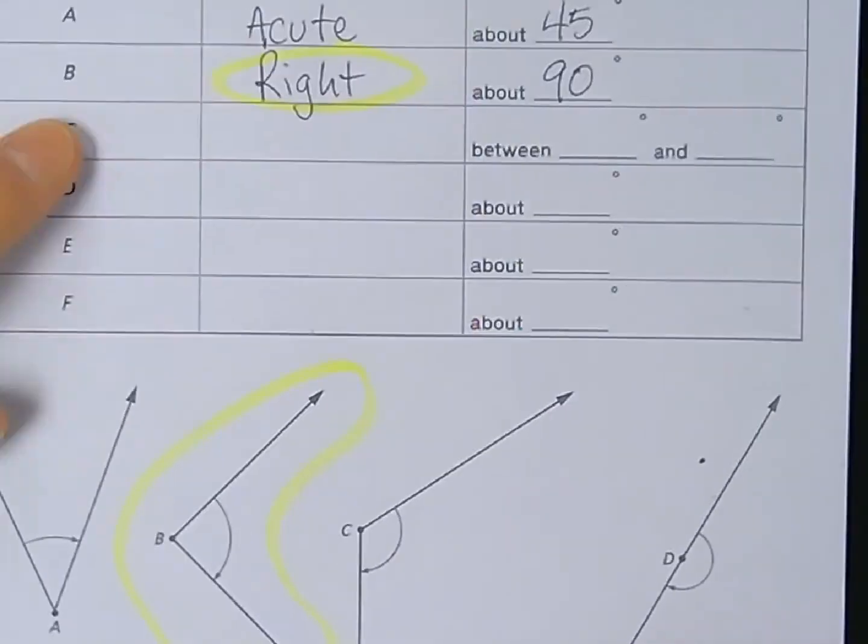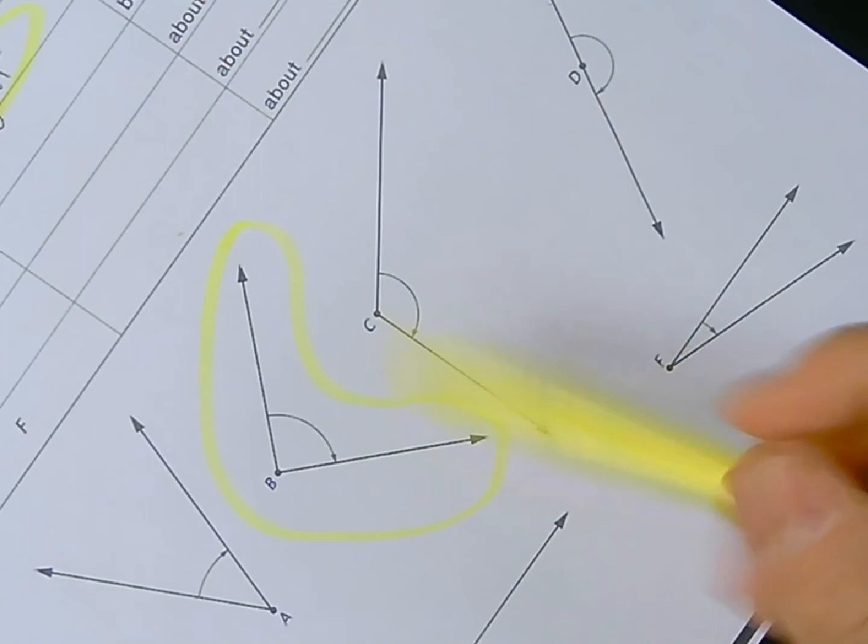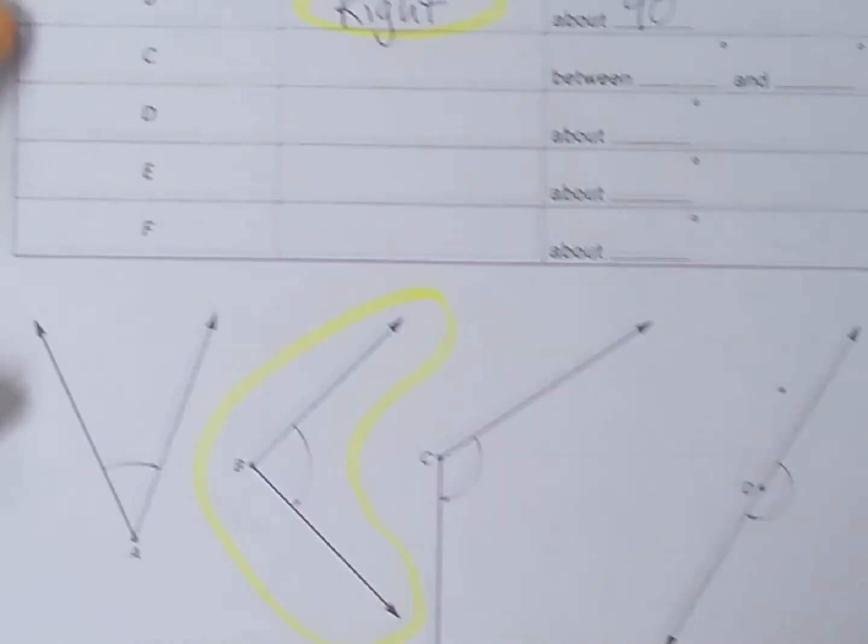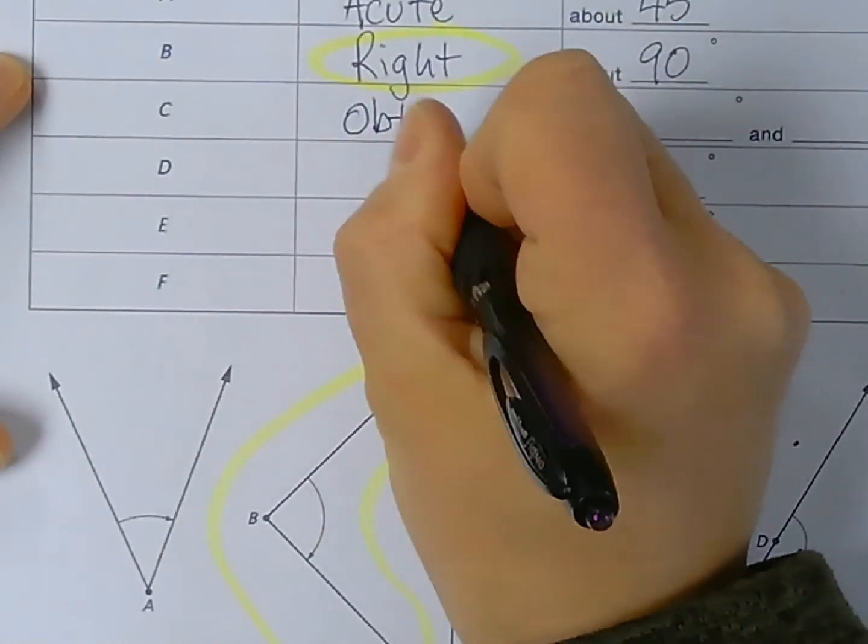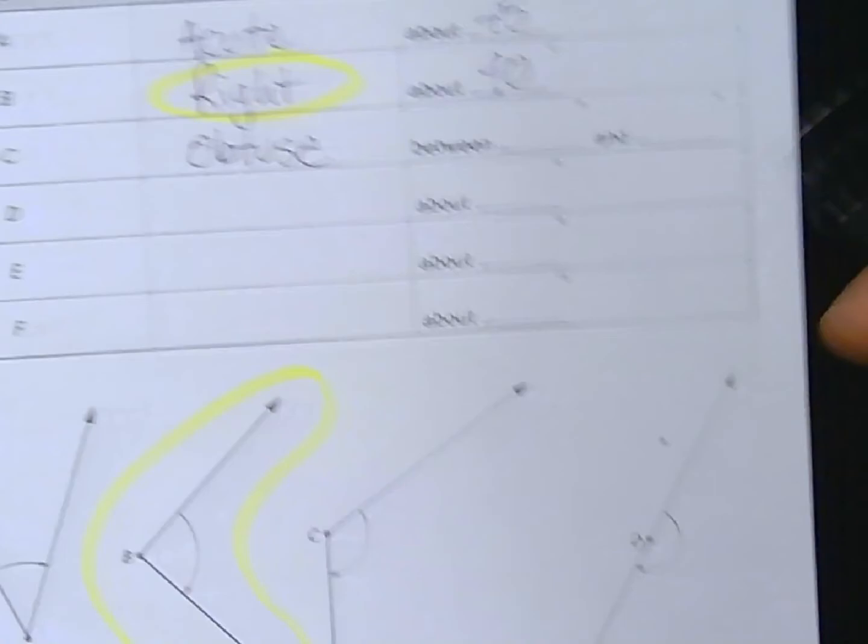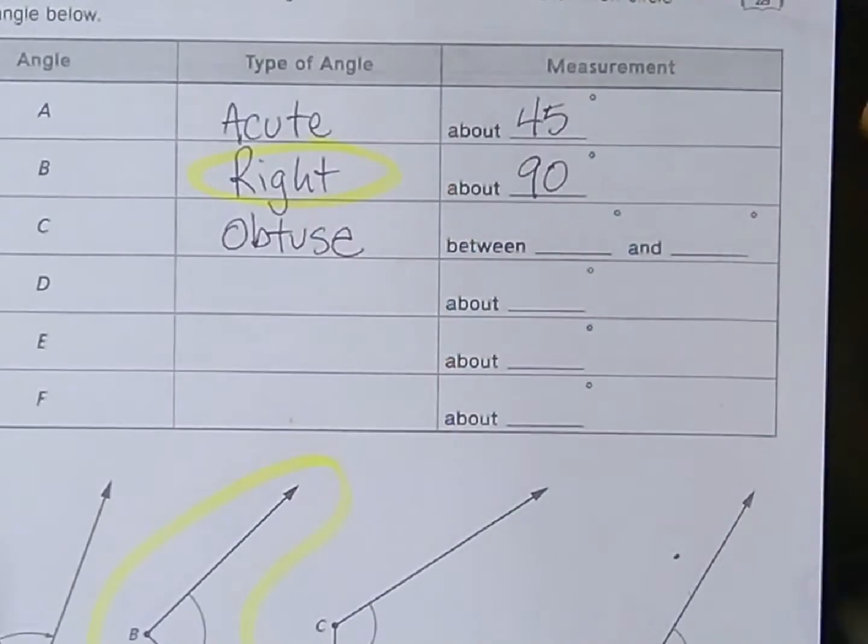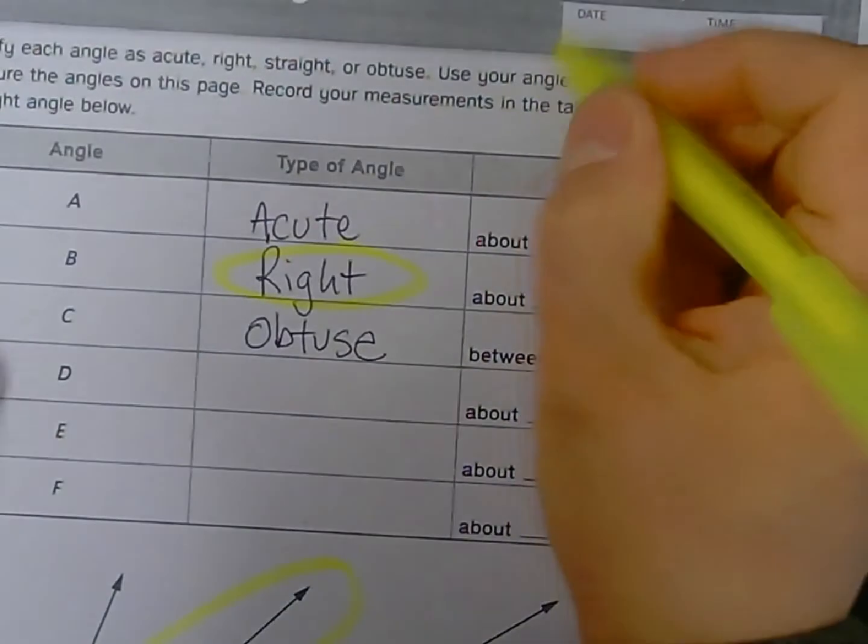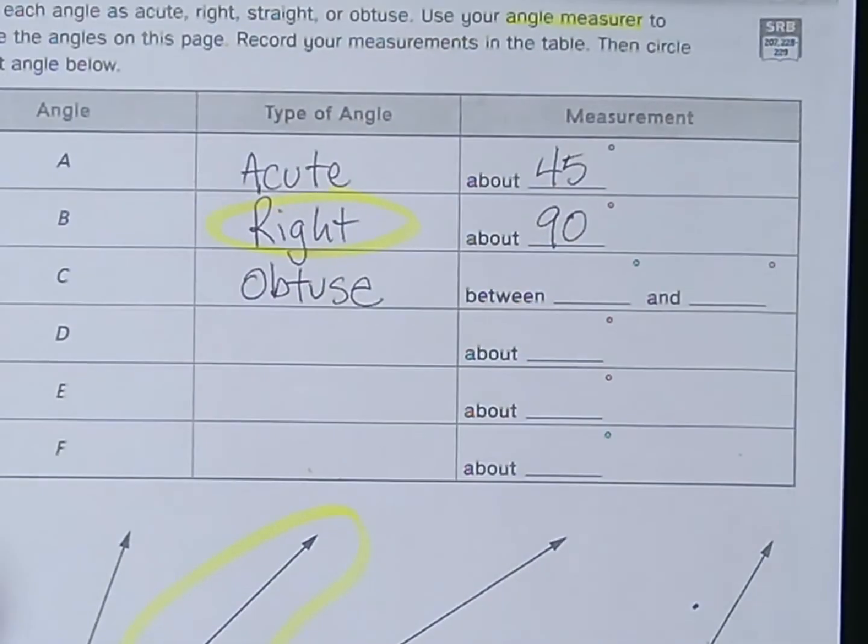Let's do one more, and then I'm going to leave you some to do on your own. Angle C. Well, compared to angle B, this is wider. And because it's wider than a 90-degree angle, it must be obtuse. Obtuse angles are bigger than 90 degrees but less than 180. So I'm going to write obtuse right here. But how obtuse is it? Well, in the space right here, it says between blank and blank. Now this ties into the fact that they initially wanted you to use an angle measurer. But again, we're going to use our protractor to get a more exacting amount.